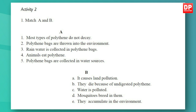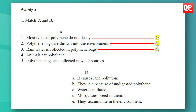Most types of polythene do not decay — this can be matched with: they accumulate in the environment. Number two: polythene bags are thrown into the environment — this should be matched with: it causes land pollution. Number three: rainwater is collected in polythene bags — this causes mosquitoes to breed in them. Number four: animals eat polythene — this should be matched with: they die because of undigested polythene. The last statement is polythene bags are collected in water sources — this can be matched with: water is polluted.